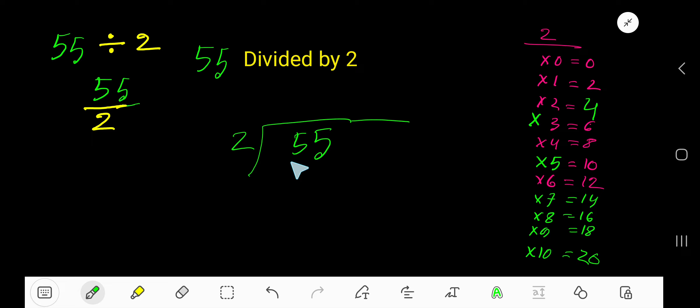Right, here we have 5. So 2 goes into 5. Actually, 3 times 6 which is greater, so 2 times. Right? 2 times 2 is 4. Subtract. Bring down this 5.